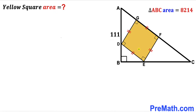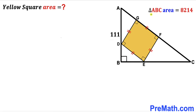Welcome to PreMath. In this video we have a yellow shaded square DEFG fully confined in a right triangle ABC. The side length of this right triangle ABC is 111 units, and the area of triangle ABC has been given to us as 8214 square units. Our task is to calculate the area of the yellow shaded square.